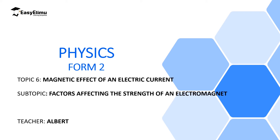Welcome to ECLIMU Learning Simplified and welcome to this lesson. In the previous lesson we discussed electromagnets and we defined electromagnets as temporary magnets which are produced when a soft magnetic material, in this case a soft iron core, is inserted inside the solenoid current. The soft magnetic material will get magnetized and one end will become a north pole and the other end will become a south pole.